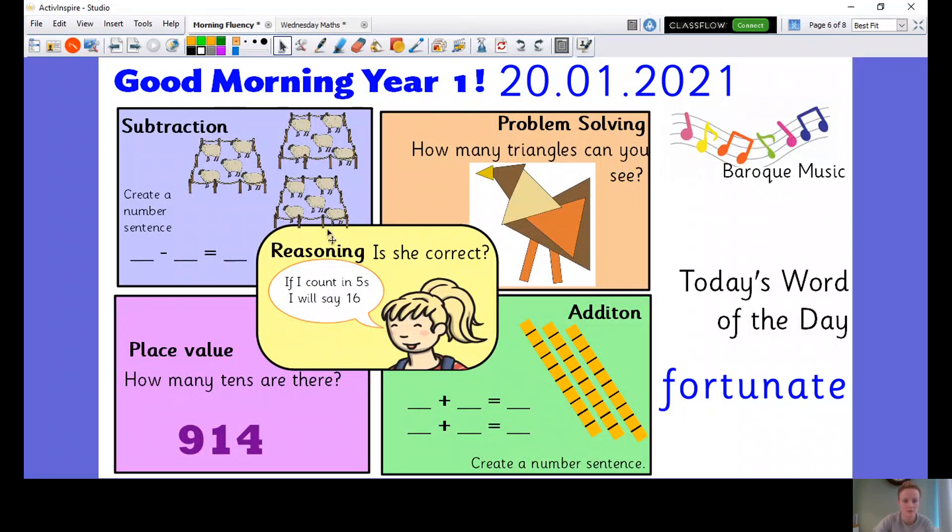Let's get started. We've got a subtraction number sentence here. So if you can work out, there's 5, 10, 15. I can count in 5s because I know they're in pens or groups of 5. So my starting number would be 15 here. So 1 ten and 5 ones, 15. So 15 minus something equals something.